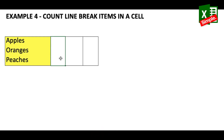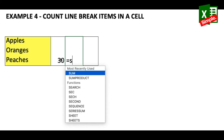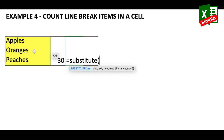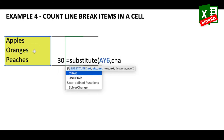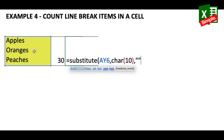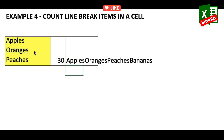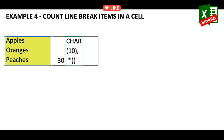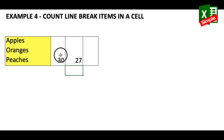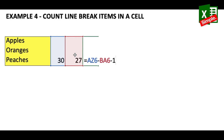First, do a simple character count: =LEN(cell). Then use =LEN(SUBSTITUTE(cell, CHAR(10), "")) which removes the line breaks and gives the new character count without them. The total number of line breaks is then: first LEN result minus second LEN result minus one — which gives us 2.